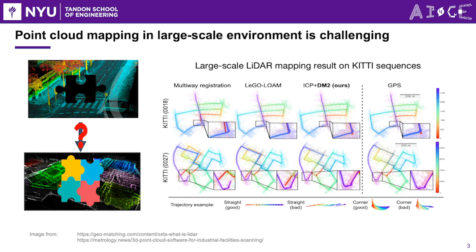Traditional LiDAR SLAM is a widely used method for simultaneous localization and mapping using LiDAR sensors. It involves processing raw LiDAR data to extract meaningful information and using algorithms like LOAM and LeGO-LOAM to align consecutive point clouds and create a real-time map of the environment. However, it is important to note that traditional LiDAR SLAM often requires tuning multiple hyperparameters.